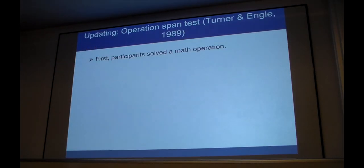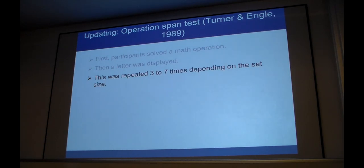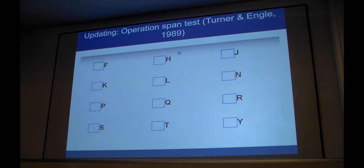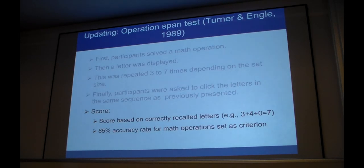We used the operation span test as a test of updating ability. First, participants saw a math operation like this, and they had to check if it's correct. And then a letter was displayed like this. I hope you're trying to remember this. This was repeated three to seven times depending on the set size. So here come two more. And then something like this appeared on the screen, and they had to click the letters in the same order that they've seen them. So what was the first letter? R1, yes. And then? R2, yes. And then? R3, well done. The score was based on the accuracy criteria, so they had to be accurate on the operations at least 85% of the time. And then the score was based on correctly recalled letters. If they could recall three sequences, then they got three points; four, then four points. If they couldn't do, let's say, the fifth sequence or the set, then it's zero points.